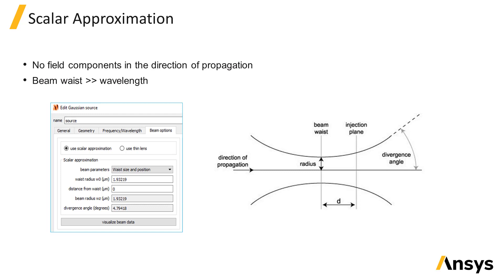The distance from waist setting can be set to a negative number if the focal plane is in front of the injection plane in order to specify a converging beam, or it can be set to a positive value to specify a beam which is diverging as it propagates from the injection plane.